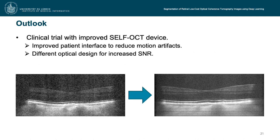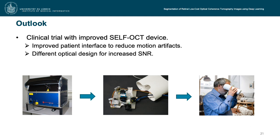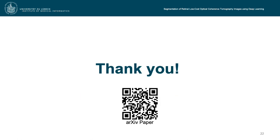In the meantime, the SELF-OCT has been further developed. An improved patient interface could reduce motion artifacts and an advanced optical design increases the SNR. The improvement in image quality can be clearly seen in the two figures. However, analysis of the image data remains challenging. Finally, the size of the technical components of the SELF-OCT has been reduced so that it now fits into a handheld device, suitable for a home monitoring application. For further information, you can access our SPIE paper and archive via the QR code. Thank you very much.